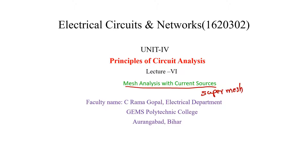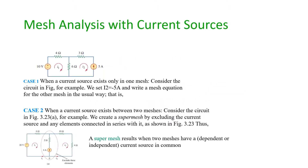Sometimes in the loop there are current sources. When current sources exist in the mesh, you cannot apply KVL. Therefore, you have to go for supermesh.